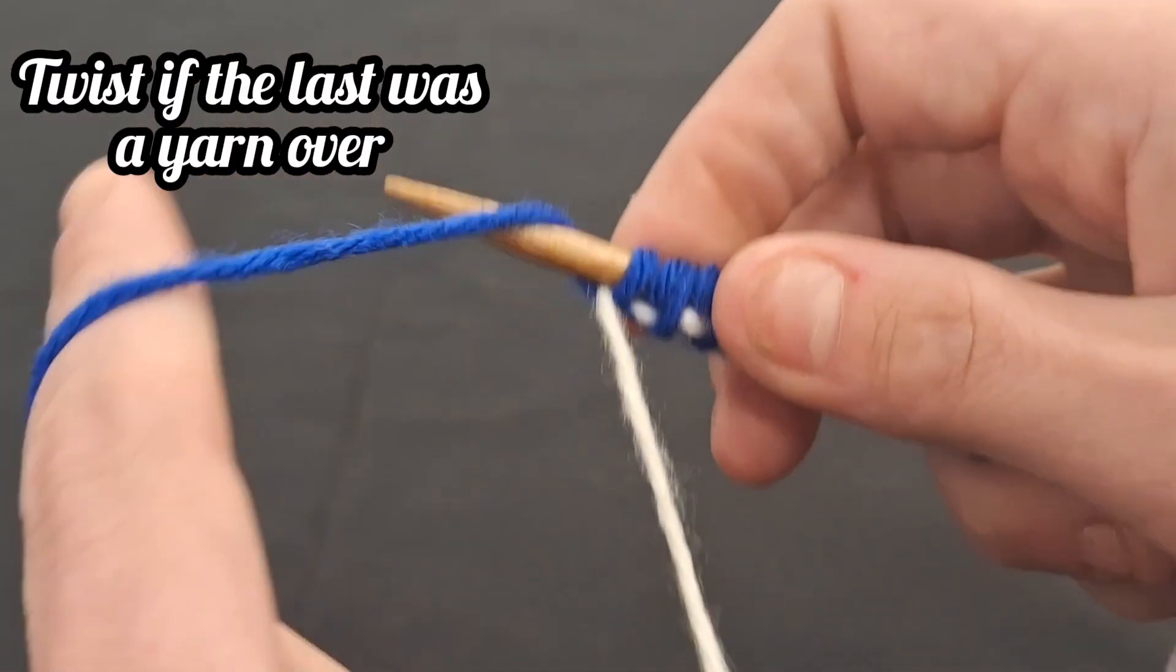One neat feature of this cast on method is that you could just pull out the scrap yarn just like a drawstring. These stitches, once the scrap yarn is removed, will become live stitches, meaning they can be dropped or come undone. Continue knitting your work as intended, in the new direction as planned.